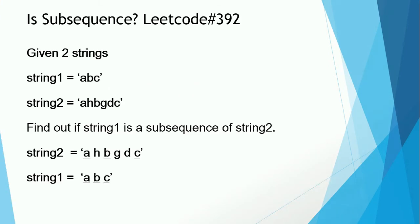The problem statement is quite simple. You are given two strings, string 1 and string 2, and you need to find out if string 1 is a subsequence of string 2. So string 1 is ABC and string 2 is AHBGDC. You can see that ABC does exist as a subsequence in AHBGDC. In this case our dynamic programming algorithm should return true, which we will begin designing in a few moments.